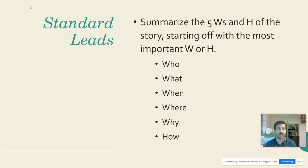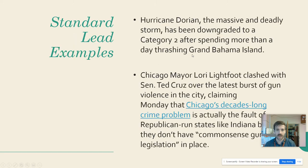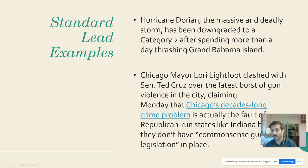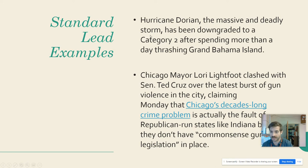The first type is called a standard lead. Right out of the bat, you tell me who, when, where, why, how — summarize the five W's and the H, or as many as you can, starting with the most important. For example: 'Hurricane Dorian, the massively deadly storm, has been downgraded to a category two after spending more than a day thrashing the Grand Bahama Island.' I know what we're talking about, where, why, and what has changed — all the important information in one sentence.